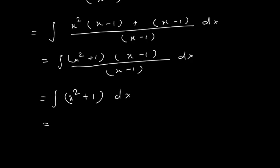Integration of x² is x³/3, and integration of 1 is x. So I = x³/3 + x + c.